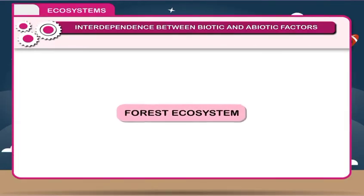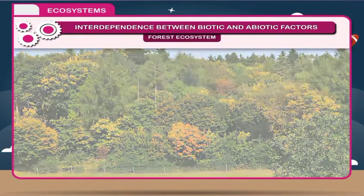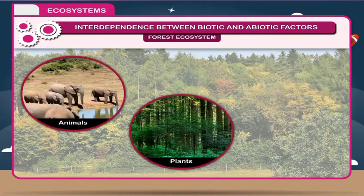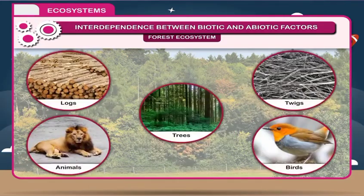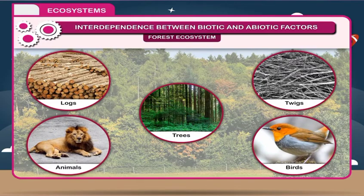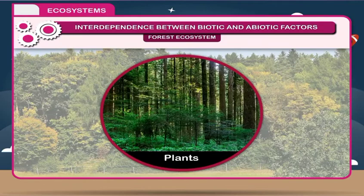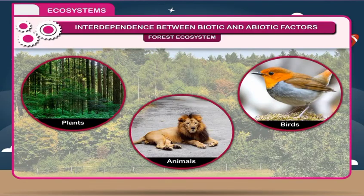Forest Ecosystem: A forest ecosystem is a complete ecosystem which includes herbs, shrubs and trees, animals, plants, and decomposers or microorganisms. Dead things such as logs, twigs, trees, animals, birds, rocks, water, and soil are also part of it. Plants are producers while animals and birds are consumers.